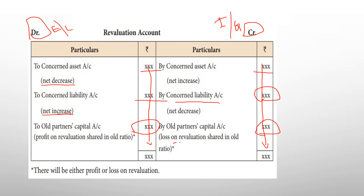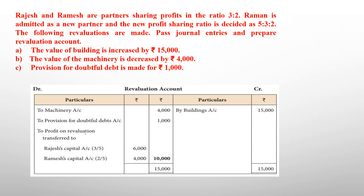So the loss is on the debit side and profit is on the credit side. Profit is credit side, loss is debit side. So the transfer will be to the capital account. Now we will see a practical example.